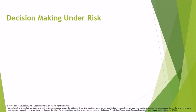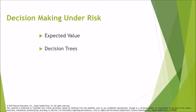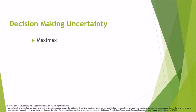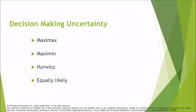Decision-making under risk uses tools such as expected value, decision trees, and queuing. Decision-making under uncertainty involves approaches such as maximax, maximin, and equally likely criteria.